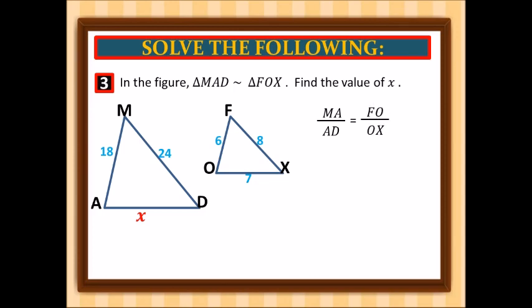So MA is equal to 18, and AD is equal to x. FO is equal to 6, and OX is equal to 7.